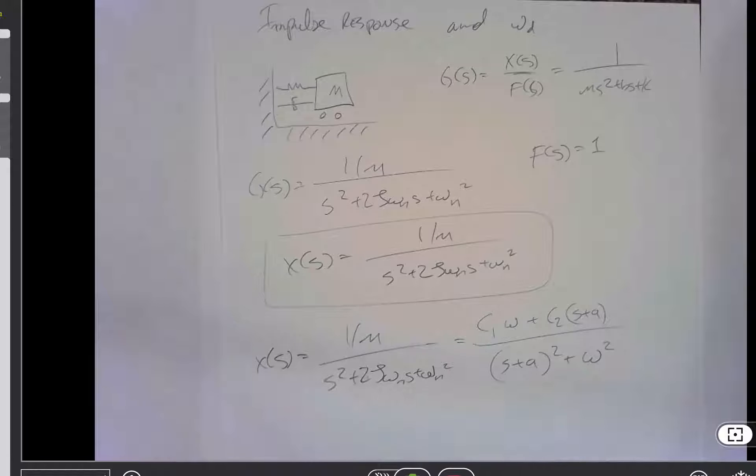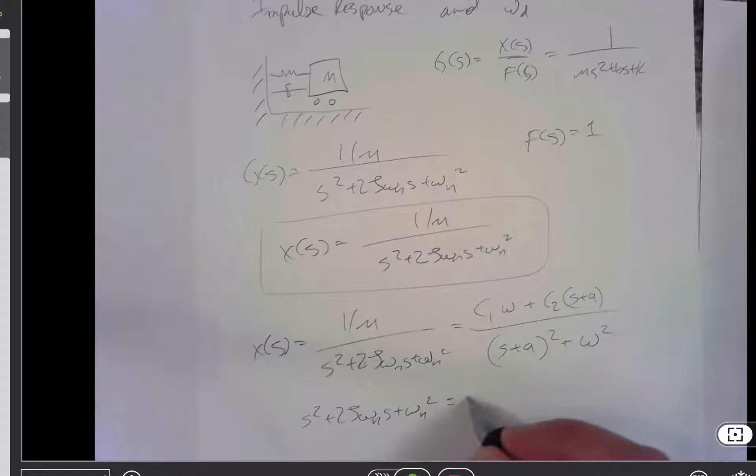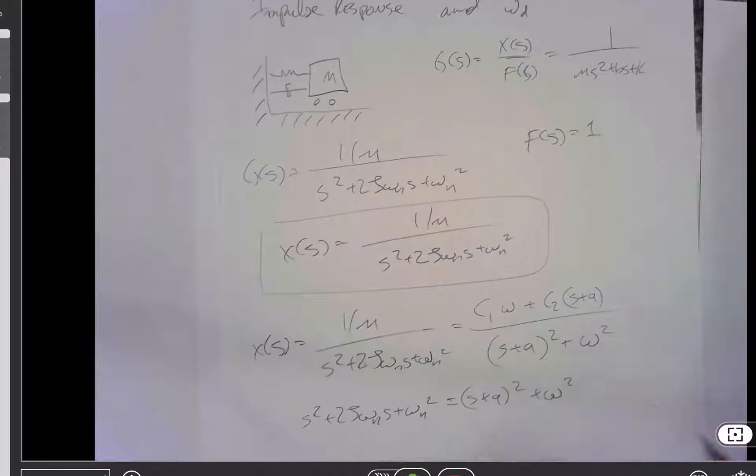Both the numerator and the denominator have to be equal to one another. So let's take a look at these two denominators and how could they possibly be equal. So if s squared plus 2 zeta omega ns plus omega n squared is equal to s plus a squared plus omega squared.